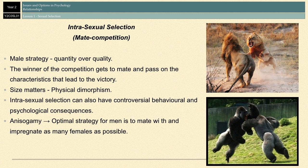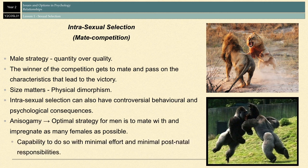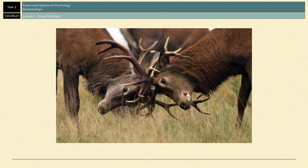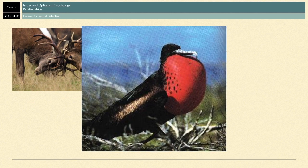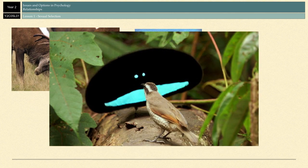In terms of anisogamy, the optimal strategy for males is to mate with and impregnate as many females as possible, because they have the capability to do so with minimal effort and minimal postnatal responsibilities. In the animal kingdom, males reproduce and move on, and it's the females who usually care for the offspring. For example, the stag competes with other stags in terms of antlers — the strongest stag with the biggest antlers wins.